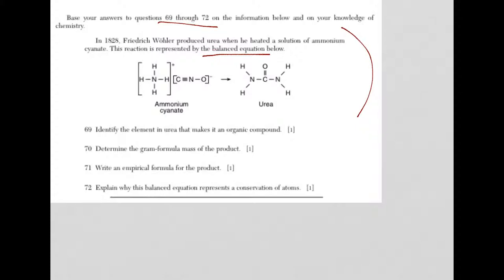Question 69: Identify the element in urea that makes it an organic compound. If you know the definition of organic compound, you have your answer. Organic compounds contain carbon. So your answer here for 69 is carbon.